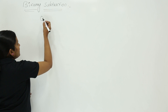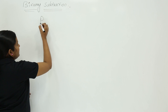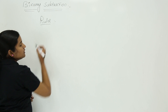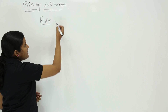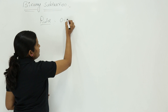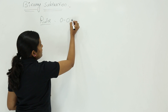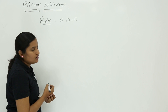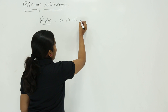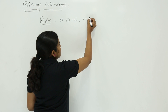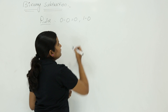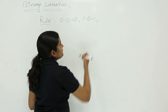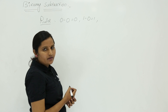These are the rules for binary subtraction. The first rule: if you are subtracting 0 from 0, you are going to get 0 only. The second rule: if you are subtracting 0 from 1, you are going to get 1.